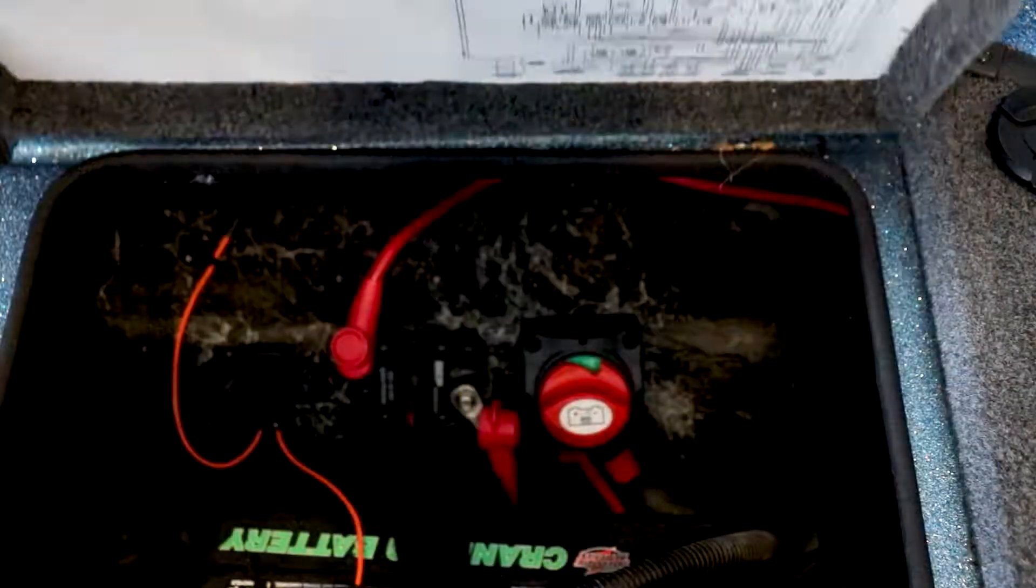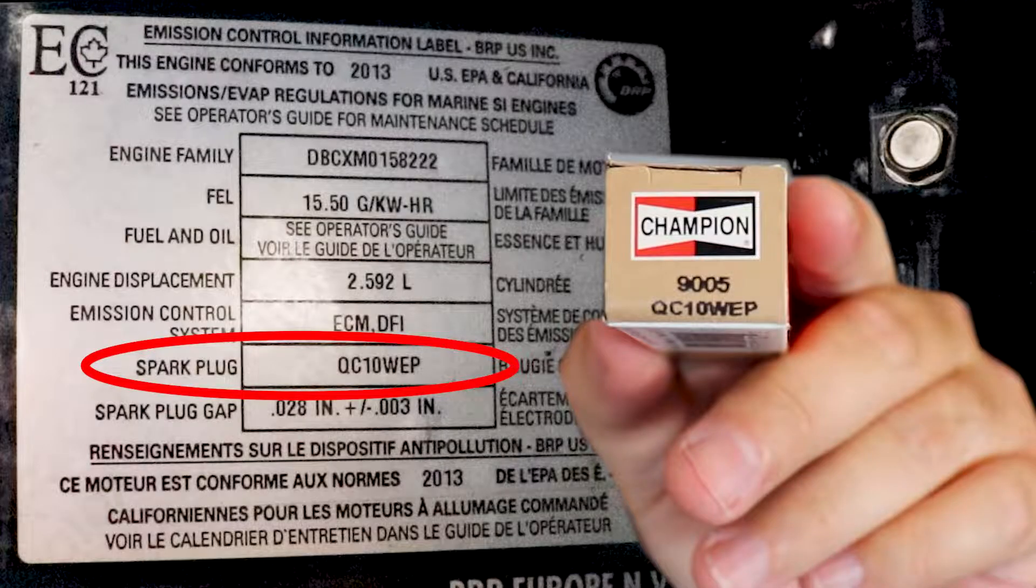As always, safety first, so we're going to disconnect the battery. Making sure you have the right spark plug is actually pretty easy. Evinrude actually put the spark plug model number right on the motor mounting bracket. In our case, our part number is going to be Quebec Charlie 10 Whiskey Echo Papa.